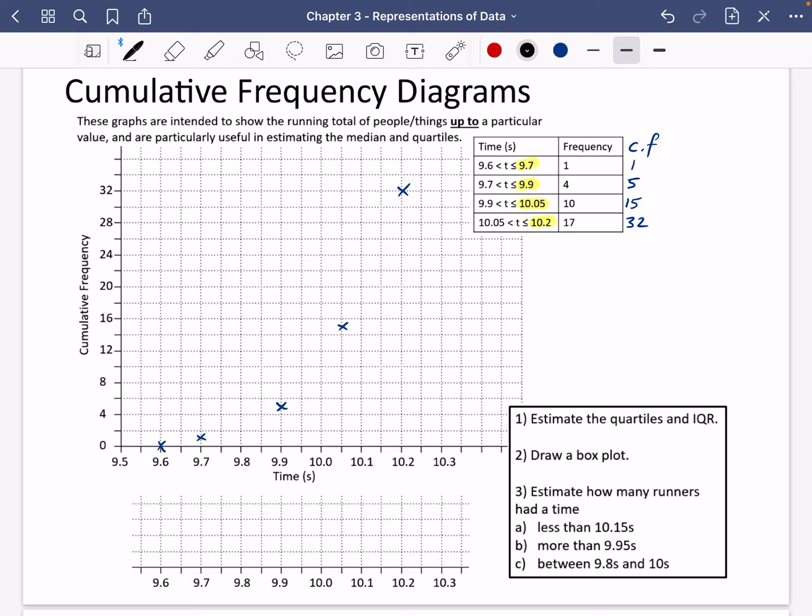And when you did these at GCSE, you probably drew them with a smooth line. But because we presume that everything has got an equal distribution here, we're actually going to join ours together using a straight line. We are presuming that everything is equally distributed, meaning that the line would be straight rather than a curved line.